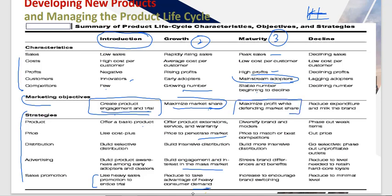In the maturity stage, the objective is to maximize profit while defending market share. Strategies include diversifying brands and models, launching into new markets, using competitive pricing to beat rivals, using more intensive distribution, stressing brand differentiation in advertising, and increasing sales promotion to encourage brand switching.